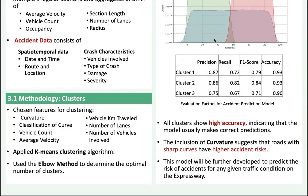To begin with, we applied the k-means clustering algorithm to group accident and non-accident samples with similar characteristics. The features used for clustering include curvature, curve classification, vehicle count, average velocity, vehicle kilometers traveled, number of lanes, and the number of vehicles involved in the accident.